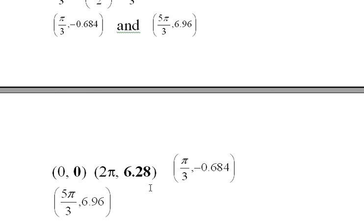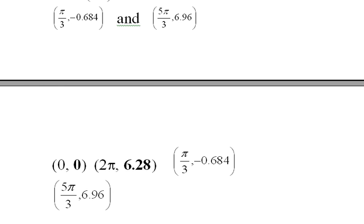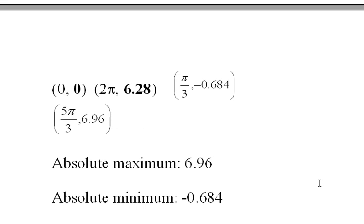Here are all the possible absolute maximum and absolute minimum values for this function: 0, 6.28, -0.684, and 6.96. It's obvious that the absolute minimum is -0.684 and the absolute maximum is 6.96. These are the smallest and biggest values of the four function values. The absolute maximum this function takes on from 0 to 2π is 6.96, and the absolute minimum is -0.684.